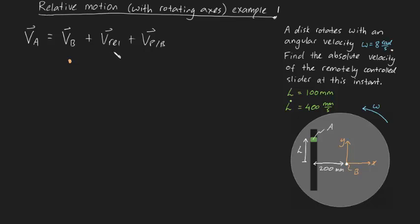Now what about V rel? V rel is the velocity of our slider relative to our rotating object. Or another way to think about that is, it's the velocity of A as if omega was zero. And so if that's the case, you can tell that the velocity of A will be perfectly upwards at this instant.